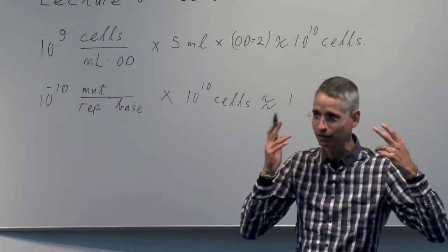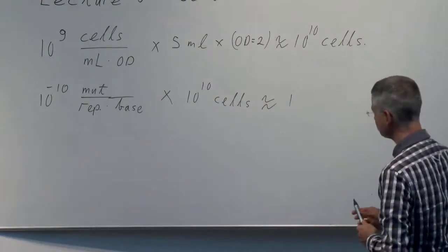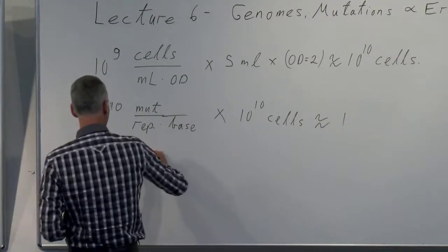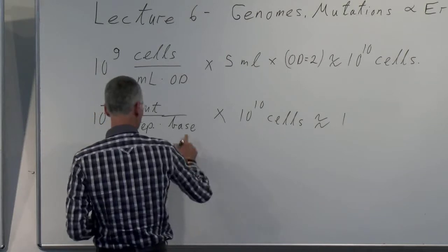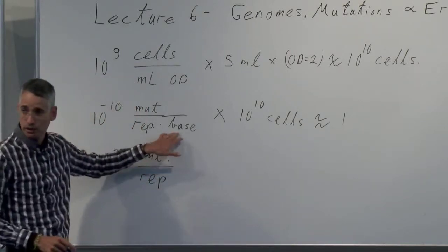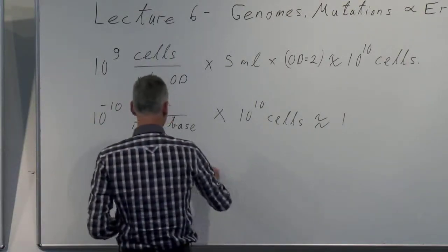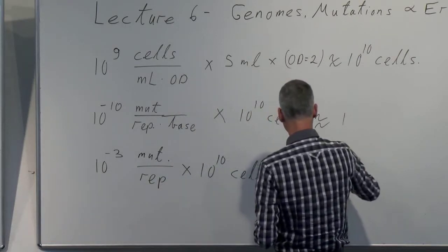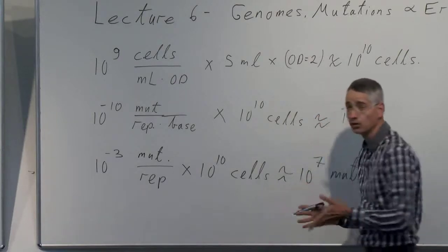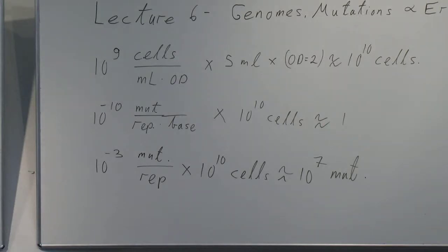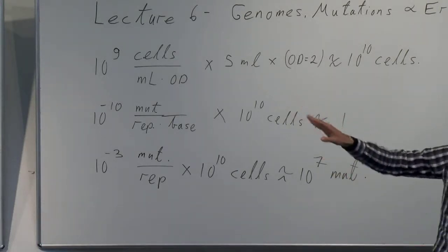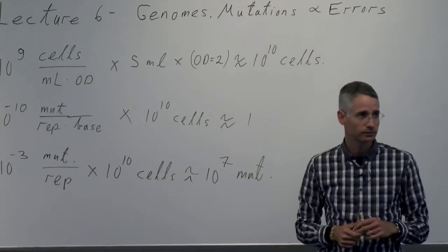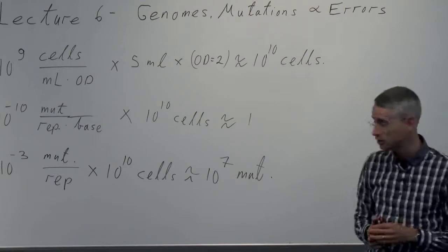Another way to see this: we said E. coli has about 10^-3 mutations per genome per replication. Multiplying by 10^10 cells gives about 10^7 mutations across the population — providing good saturation coverage of all possible single-base mutations in the genome.